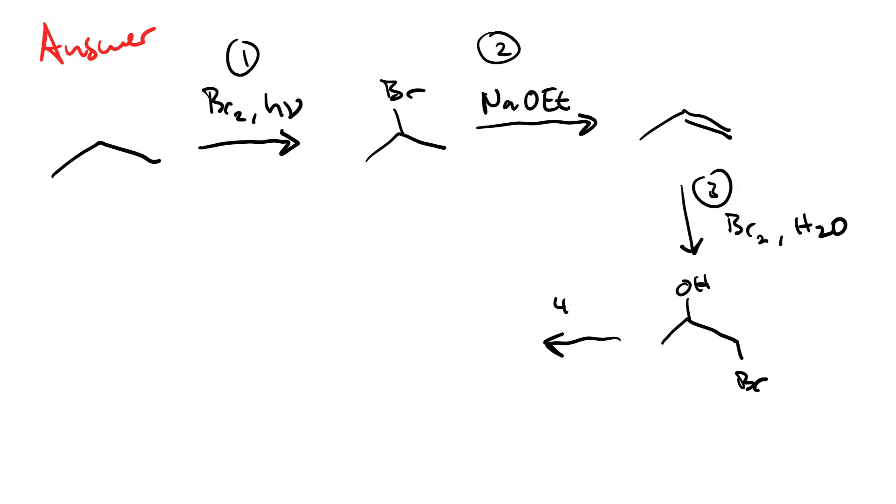Step number four, sodium hydride. The hydride ion takes a proton from the alcohol. Making the alkoxide and setting us up for intramolecular proton transfer. Or, rather, intramolecular Williamson synthesis.